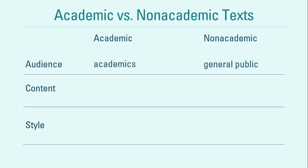Most writing and speaking assignments require formal language — one example would be research papers, written by professionals in a specific field. An architect writing a paper on the theories of architecture would use words and concepts specific to that field, which may not be understood by non-architects. Similarly, a chemist writing a scientific report would use discipline-specific words that an architect might not understand.